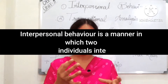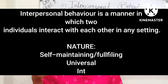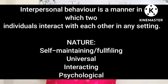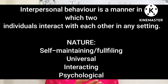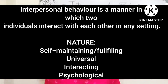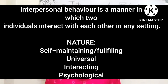Interpersonal behaviour is a process, or a setting, in which any two persons interact with each other — any system, process, setting, or any other way. It has 3 different natures: it is universally required, because everyone needs to talk to each other; it is self-fulfilling; and it is always psychological — we build relationships because it is our psychological and emotional need.